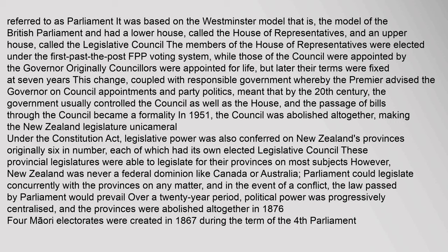Originally councillors were appointed for life, but later their terms were fixed at seven years. This change, coupled with responsible government whereby the premier advised the governor on council appointments and party politics, meant that by the 20th century the government usually controlled the council as well as the House, and the passage of bills through the council became a formality. In 1951 the council was abolished altogether, making the New Zealand legislature unicameral. Under the Constitution Act, legislative power was also conferred on New Zealand's provinces, originally six in number, each of which had its own elected legislative council.